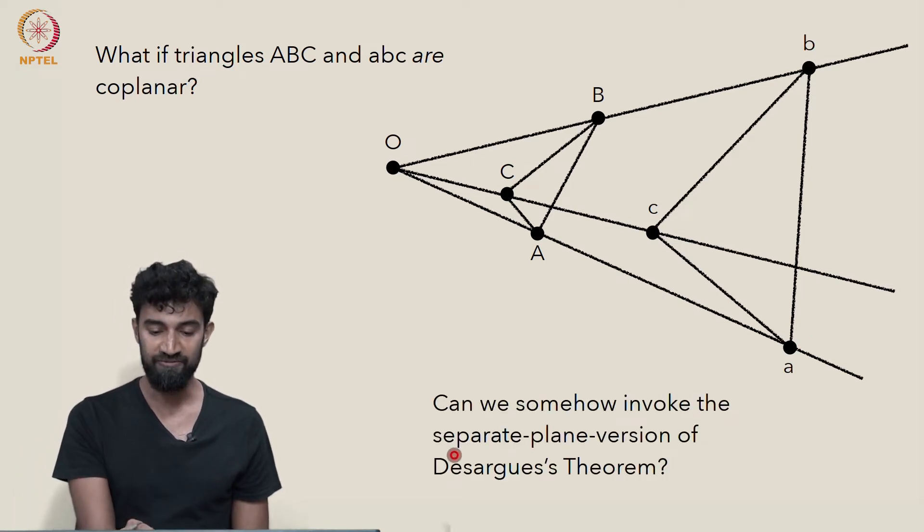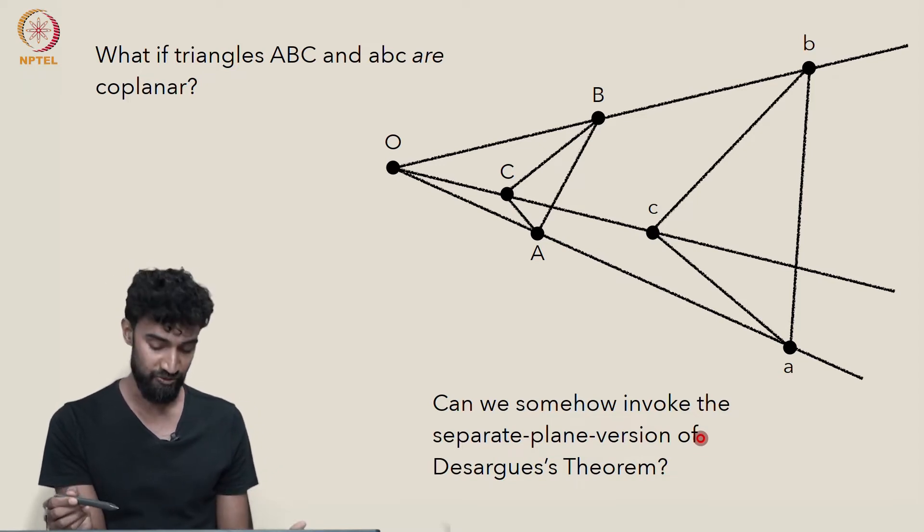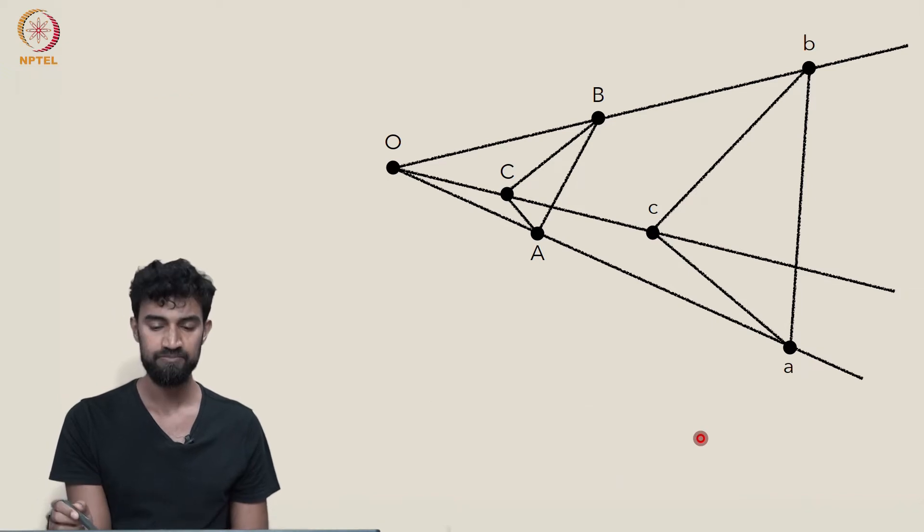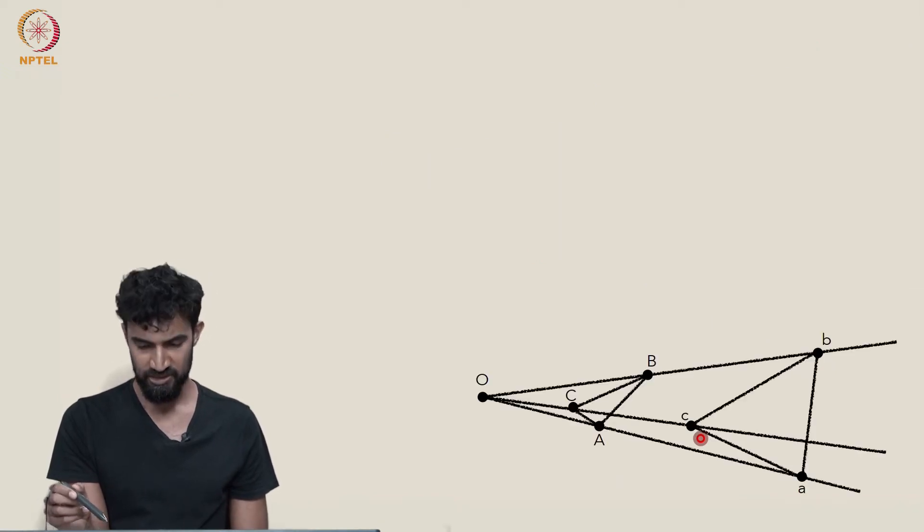Can we somehow invoke the separate plane version of Desargues' theorem that we just proved in order to prove this coplanar version? Well, yes, we actually can.